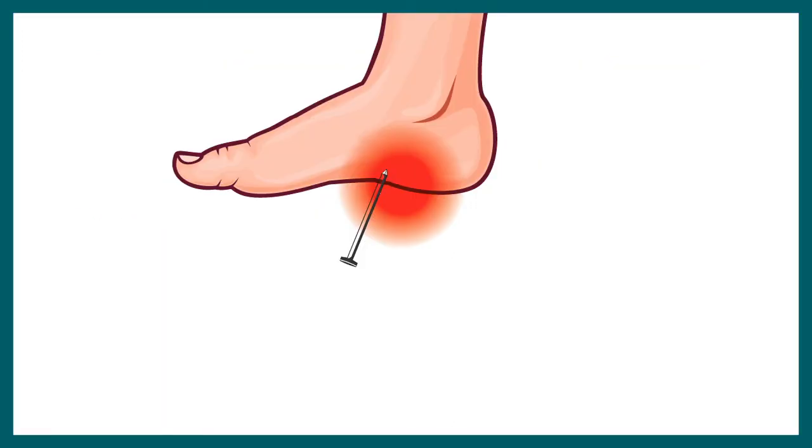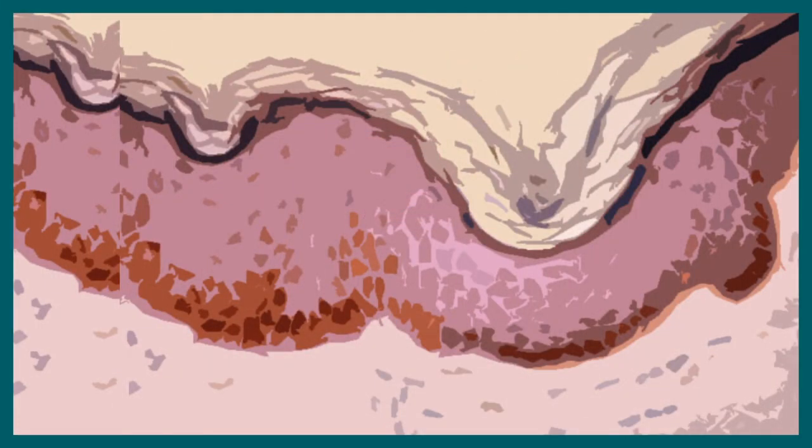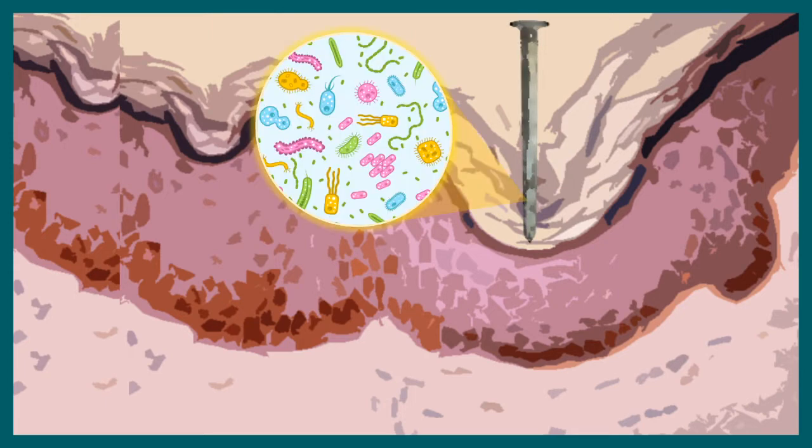Let's say you've accidentally stepped on a rusty nail and this rusty nail has breached your first line of defense, the physical barrier - the skin. With this rusty nail, a lot of bacteria has invaded your body. Right now, the body's immune system should recognize and fight back these bacteria.